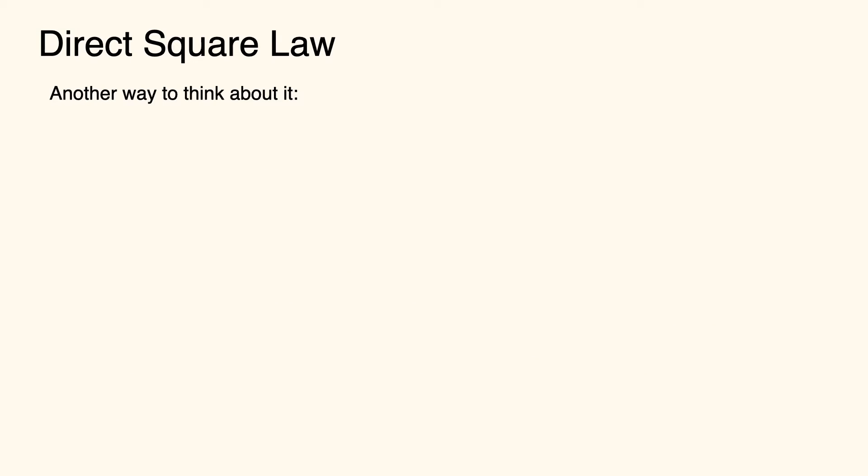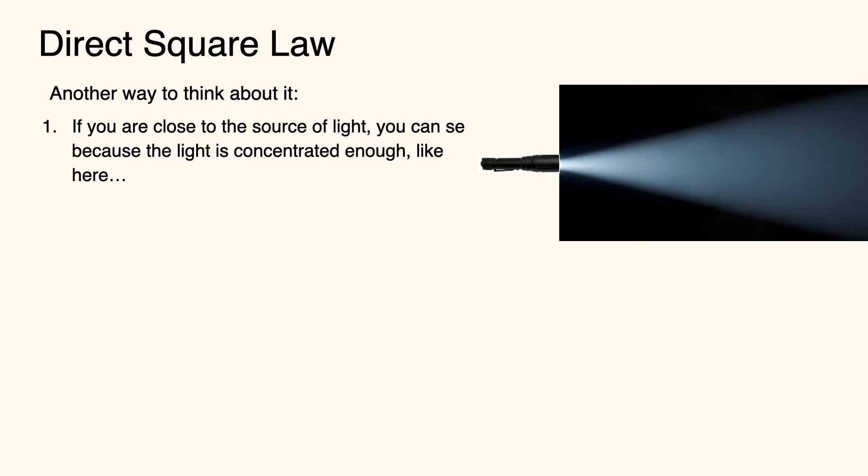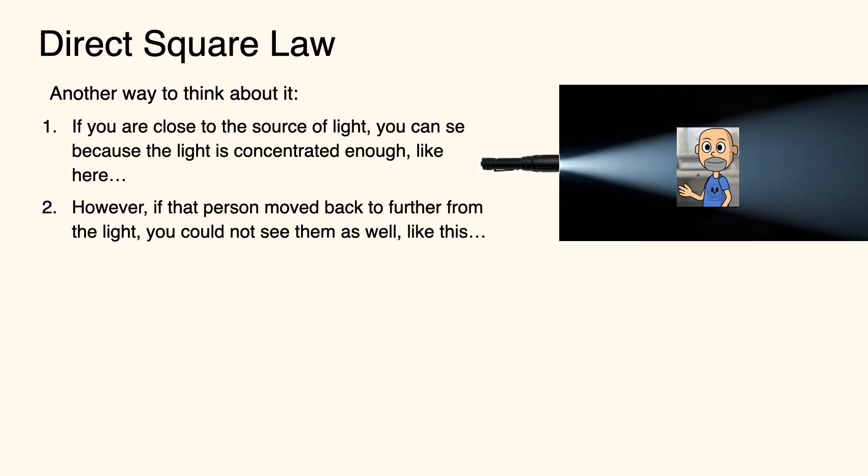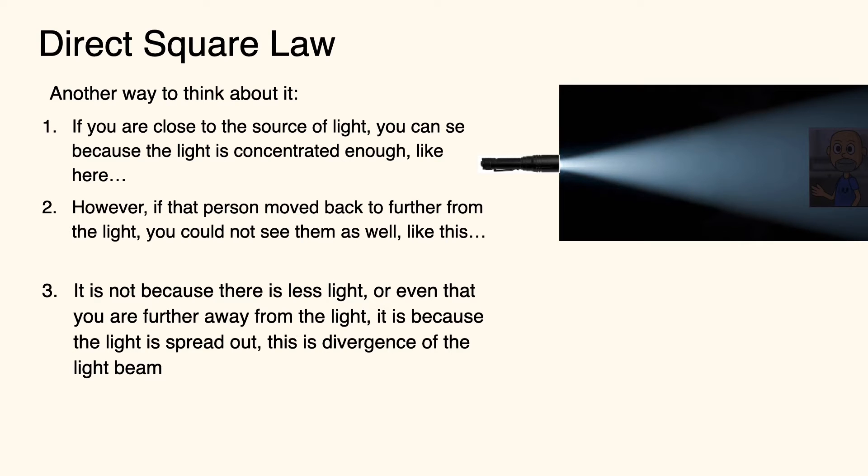So one more way to think about it is if you are close enough to a source of light, you can see because the light is concentrated. So you can see somebody that's relatively close to you. You haven't reduced the light, but if you move back further, you really can't see them as well because the light has diverged or spread out. It's not because there's less light, it's simply because you're further away from the source.